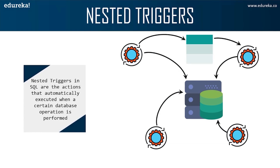You might wonder in which scenario to use a nested trigger. Continuing from the earlier scenario: Anna sends an email for every new customer added to the database. Now, what if she also wants to keep track of the number of customers to whom the email was sent? Anna would need to create a nested trigger to keep count along with sending the email. That covers the syntax of triggers — let's now implement examples in SQL.